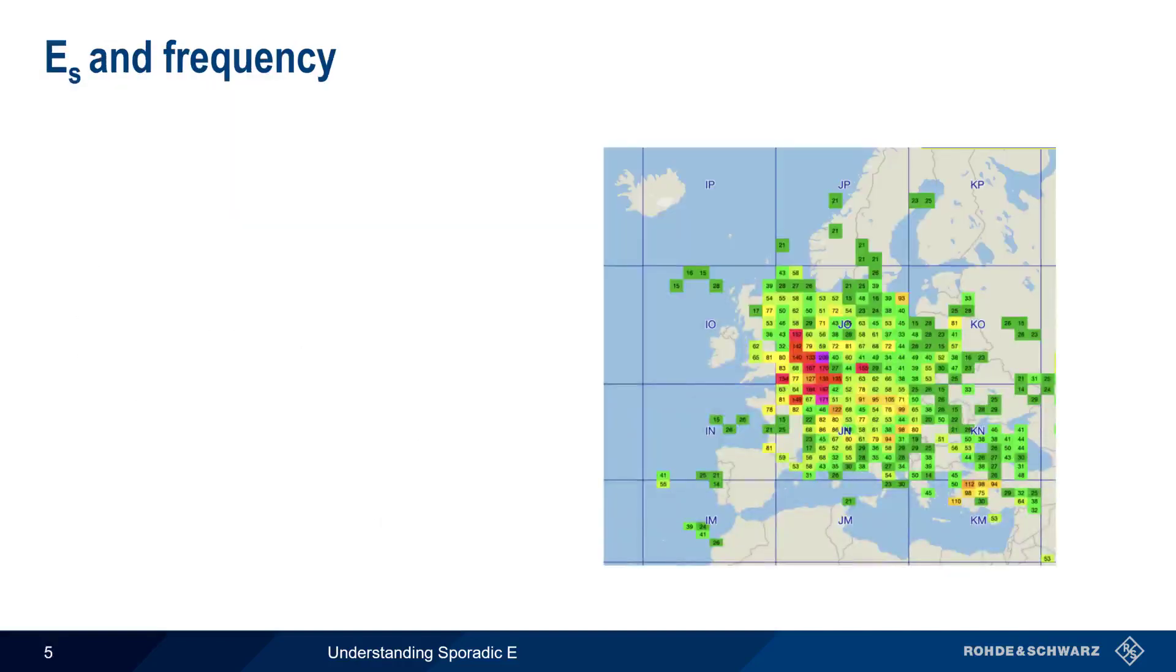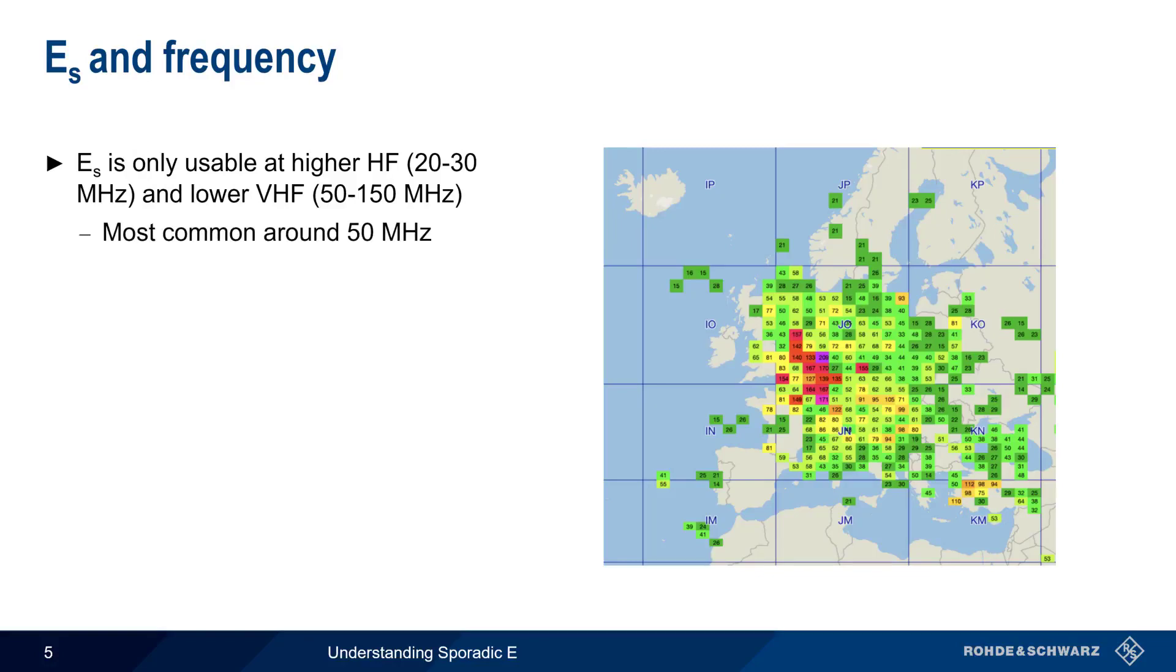Unlike F layer propagation, which is usable across most of HF at different times of the day or different days of the year, sporadic E is only usable at higher HF frequencies and lower VHF frequencies. It's most commonly seen around 50 megahertz, and on rare occasions it may extend above 150 megahertz.